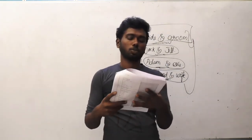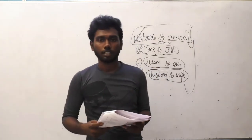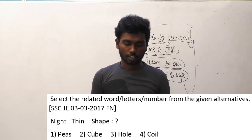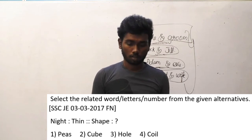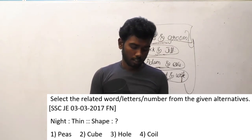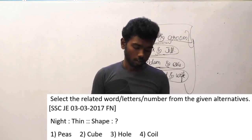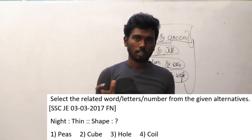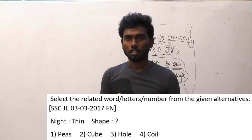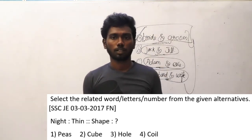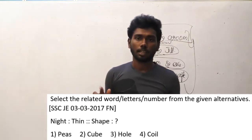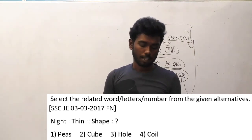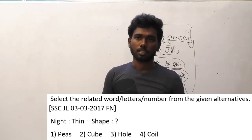Question 49 from SSCJE 3-3-2017: knight is to thin, shape is to what? Options are piece, cube, hole, coil. The logic is that the last two letters of the first word become the first two letters of the second word. Shape ends in PE, so the answer must start with P. Among the options, piece starts with P. So the answer is piece.